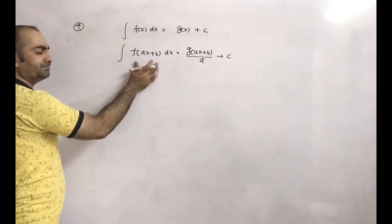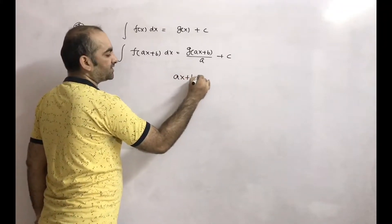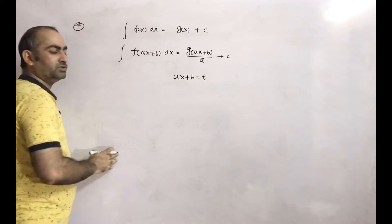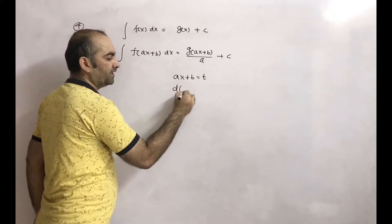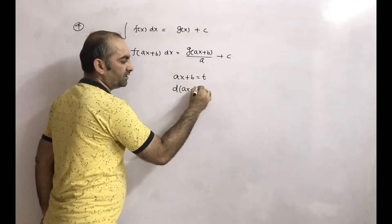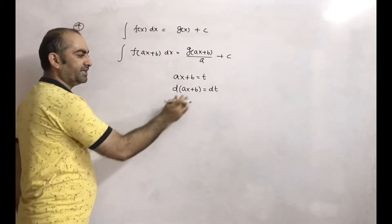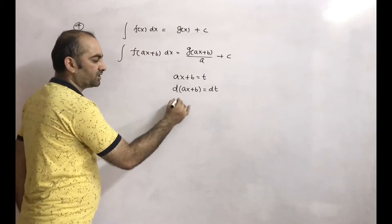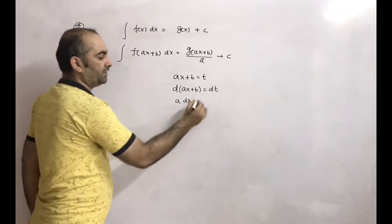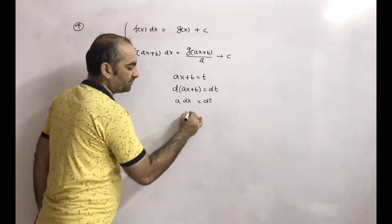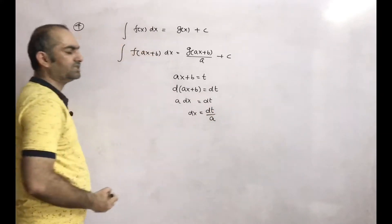How will this come? For that, what you will do: take ax+b as t. So everything we have to write in terms of t. We differentiate this: d(ax+b) = dt. Differentiating ax+b — a is a constant, x differentiated gives dx, b differentiated gives 0 — equal to dt. So from here, dx = dt/a.